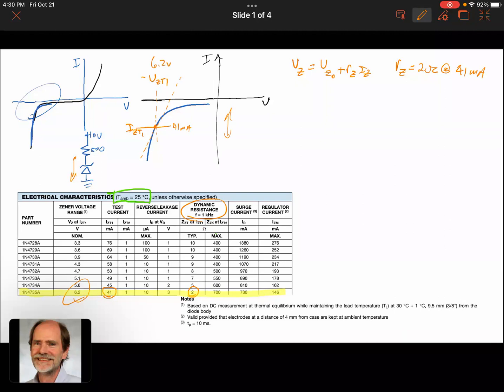So then we could say that Vz-naught—Vz-naught is this intersection right here. Let's change to a different color there. Vz-naught would be, if we just solve that equation, we've got Vz minus Rz times Iz.